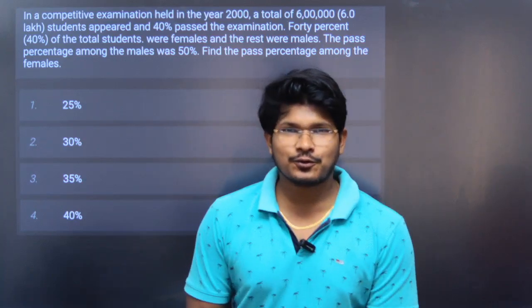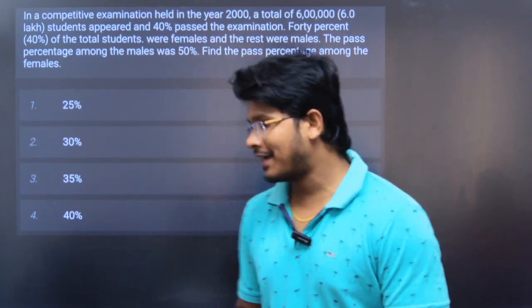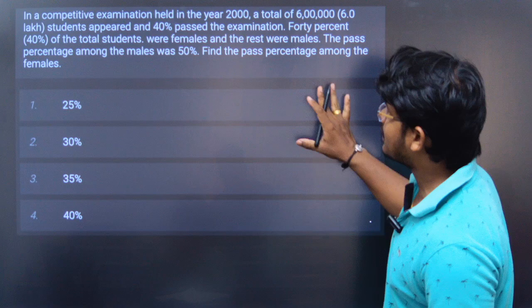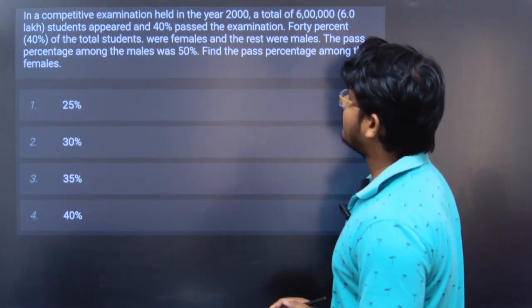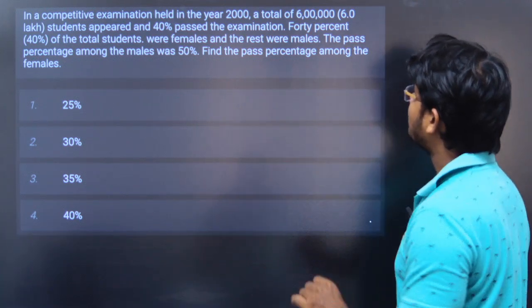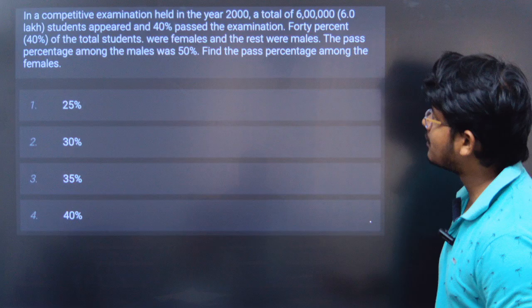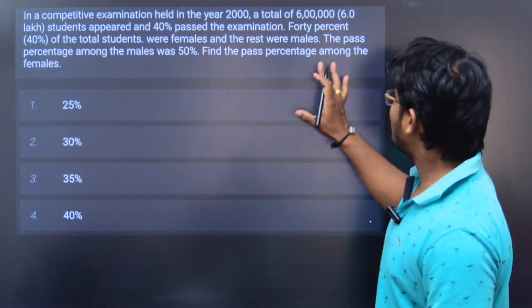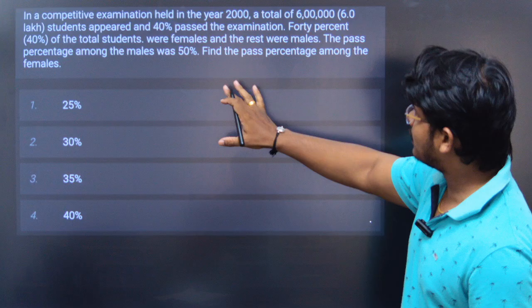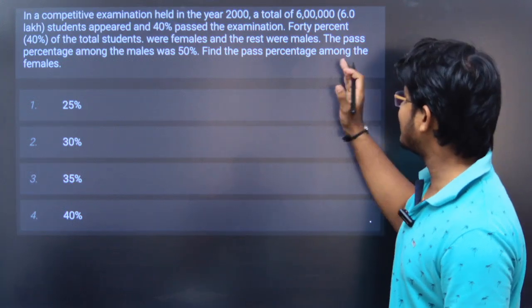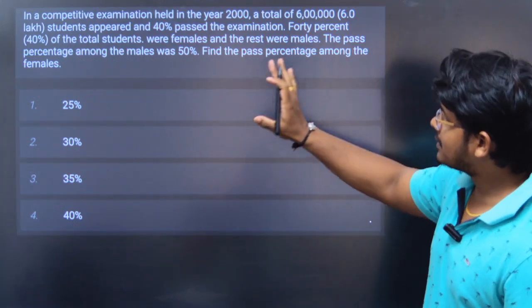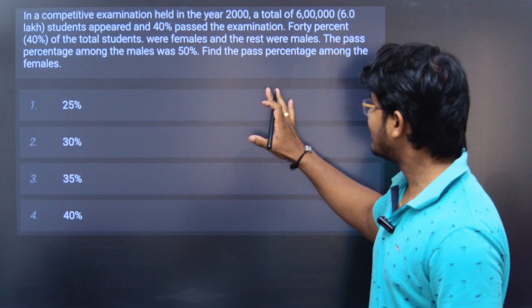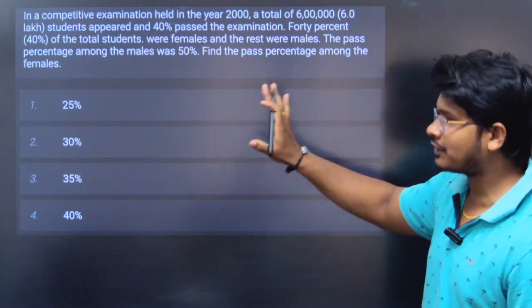The question is from the percentage chapter. In a competitive examination held in the year 2000, a total of 6 lakh students appeared and 40% passed the examination. 40% of the total students were females and the rest were males. The pass percentage among the males was 50%. Find the pass percentage among the females.